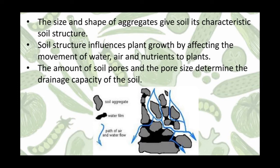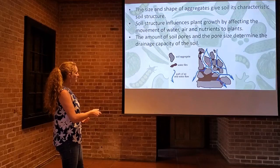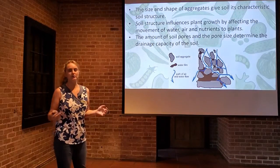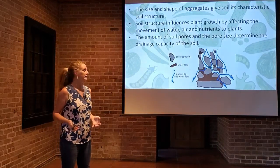Soil structure influences plant growth by affecting the movement of water, as shown in this diagram, as well as air and nutrients to plants through their root systems. The spaces in between our soil particles, or aggregates, facilitate the movement of these materials to where the plants can use them.